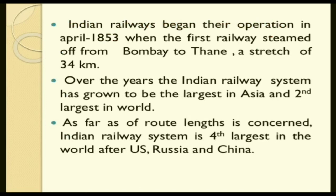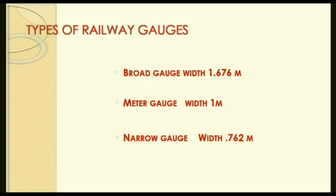The first railway ran from Bombay to Thane, only 34 kilometers, introduced by the British to carry passengers and weapons to control revolts. India's railway is the second largest in Asia and fourth largest in the world after the USA, Russia, and China. Types of gauge: The first is Broad Gauge, with a width of 1.67 meters between the two rails, used in most parts of the country.